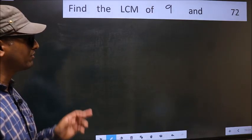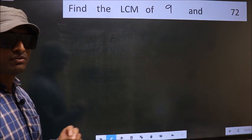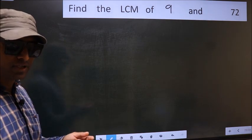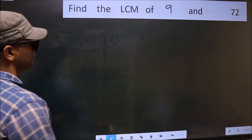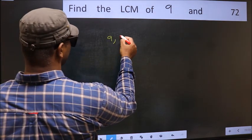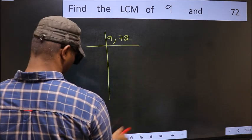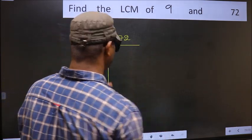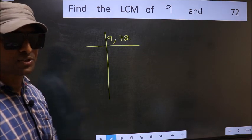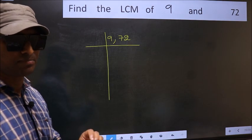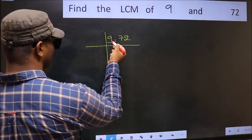Find the LCM of 9 and 72. To find the LCM, we should frame it in this way: 9 and 72. This is step 1. Now focus on the first number, which is 9. Now 9 is 3 times 3.